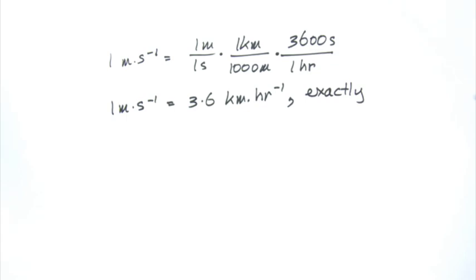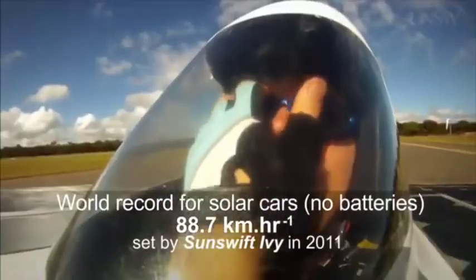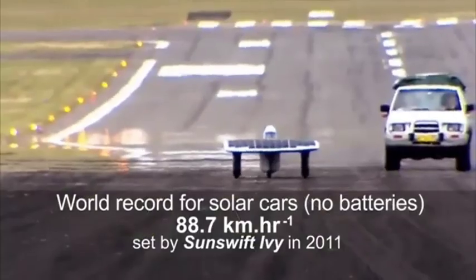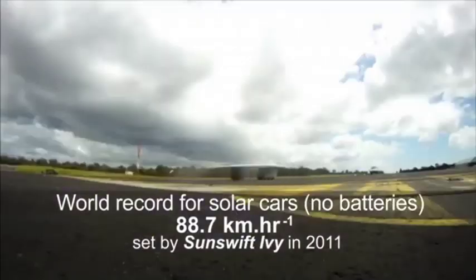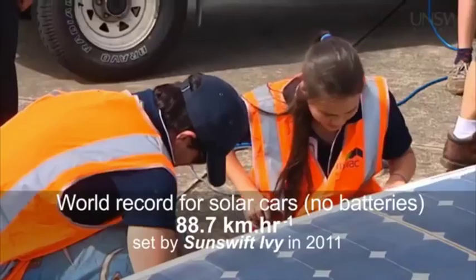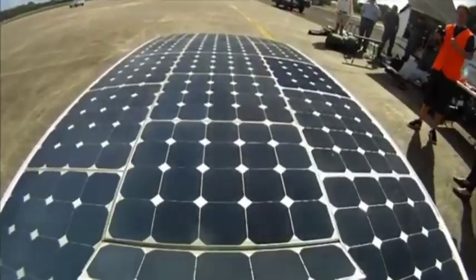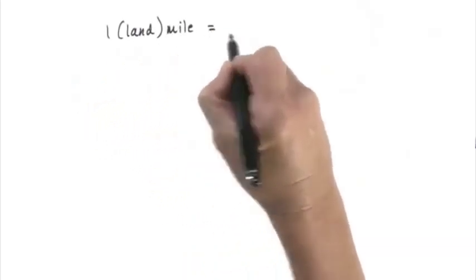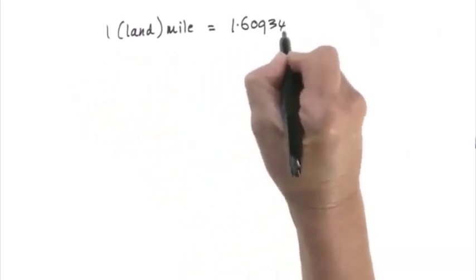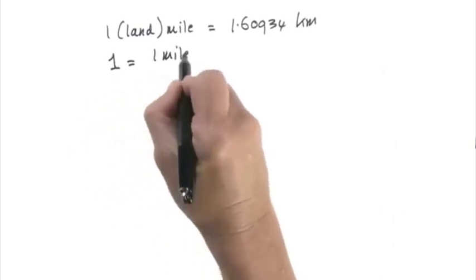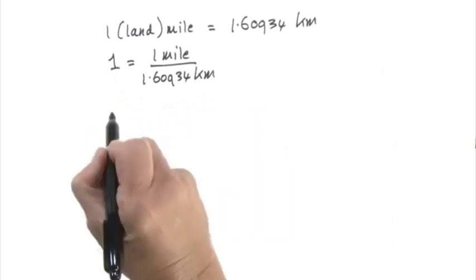We'll use real-world examples in this course, and here's a preview of one of them. The world record for a car powered by the sun alone — no batteries — is 88.7 kilometres per hour, set by a car built and raced by UNSW students. Americans use miles, so let's convert. A land mile is defined as 1.60934 kilometres, which I'll rearrange to get one.